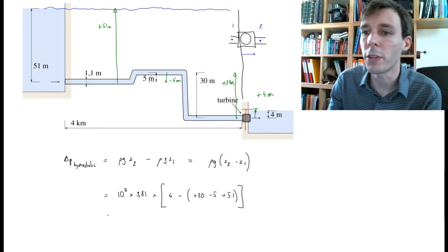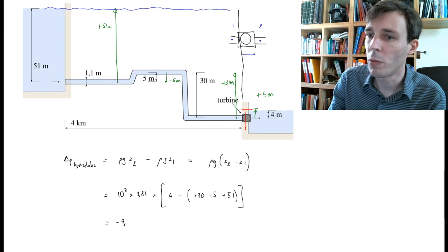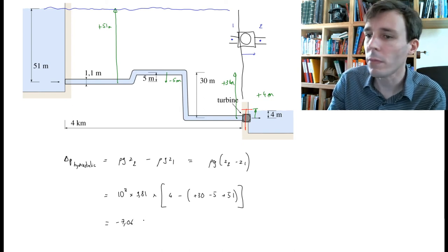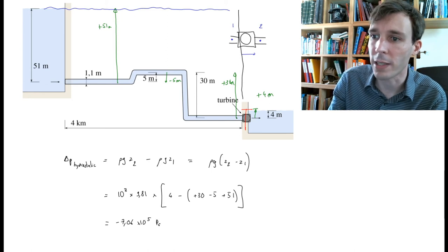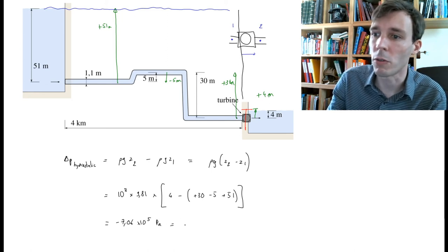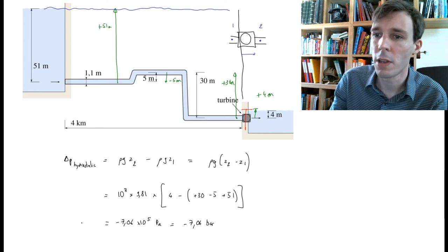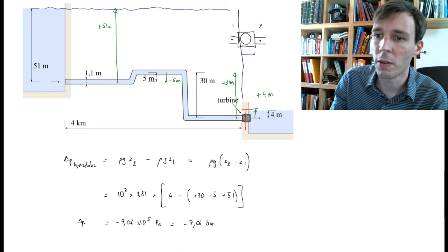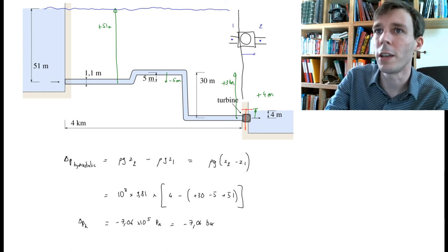If you put this into your calculator you will get minus 7.06 × 10⁵ pascals, which is also minus 7.06 bar. This is the delta p hydrostatic, and we can box this as our final result.